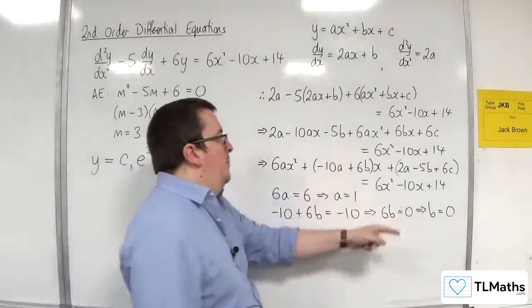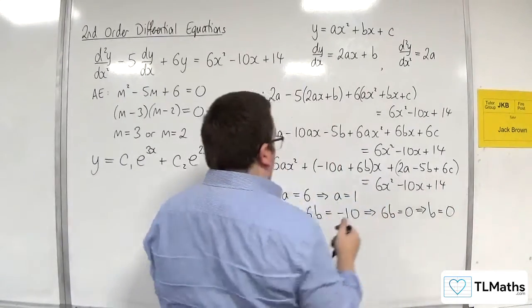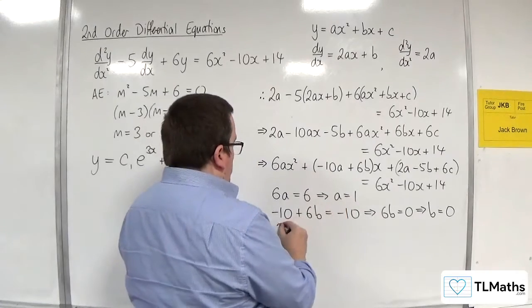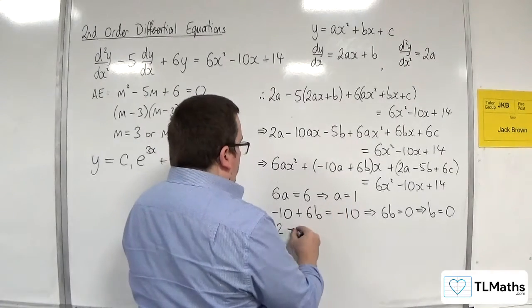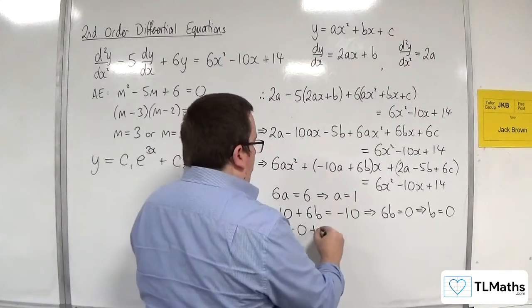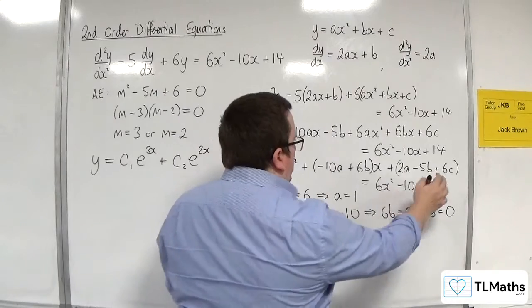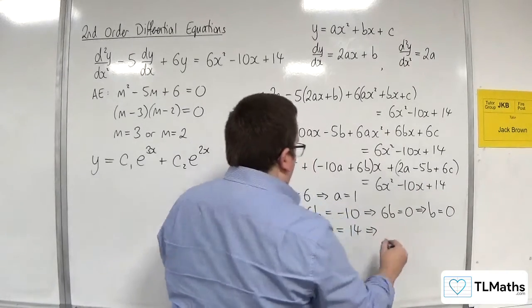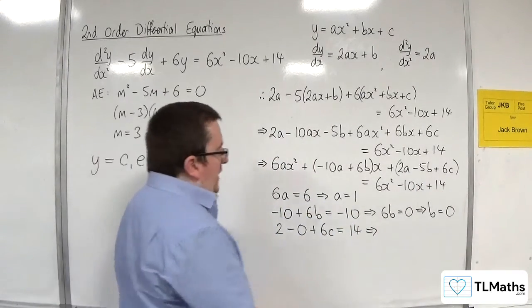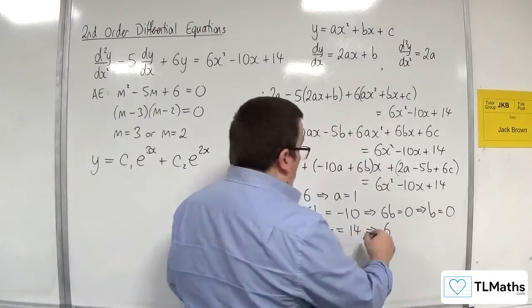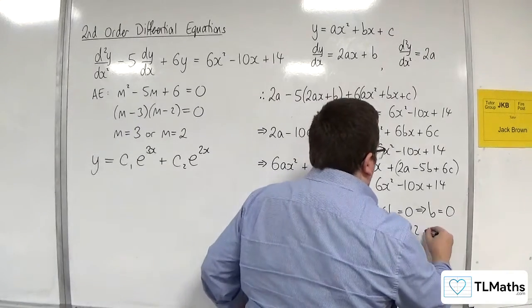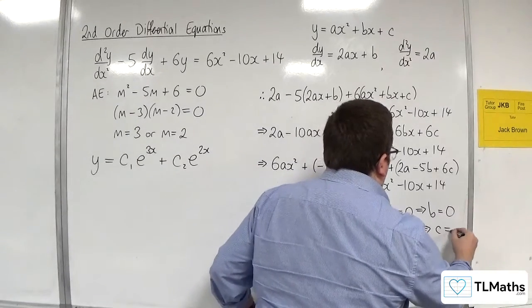So now we've got a and we've got b, we can substitute it into this one. So we get 2 lots of a, which is 2, take away 5 lots of b, plus 6 lots of c. And that's got to be equal to the 14 on the right-hand side. So 6c must be 12, and so c would have to be 2.